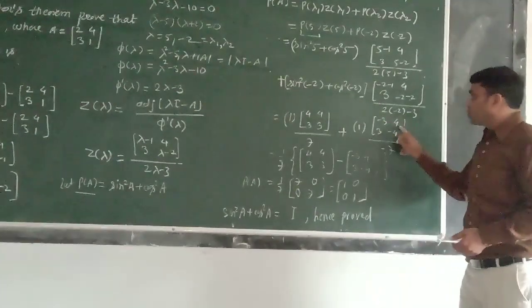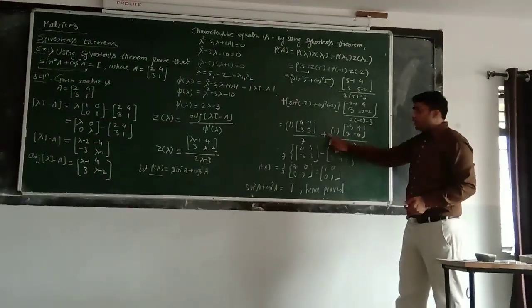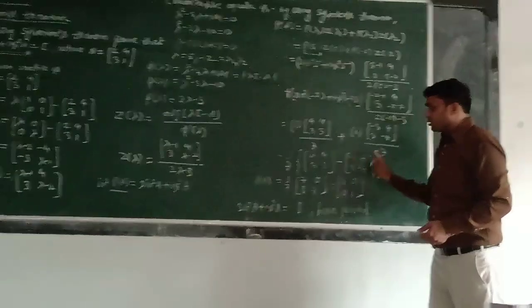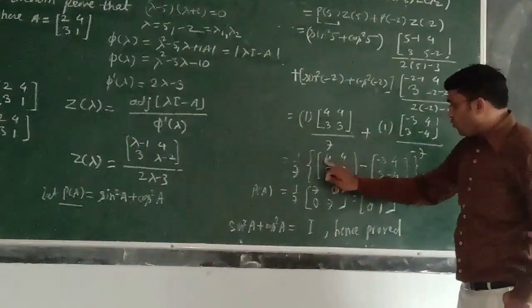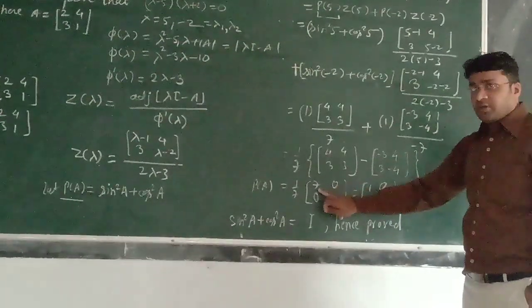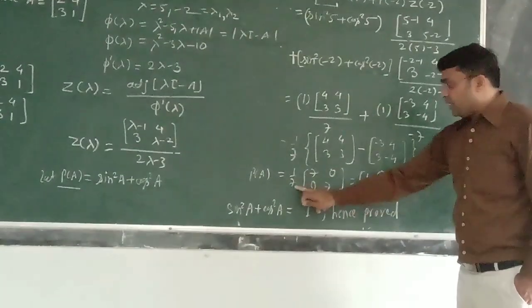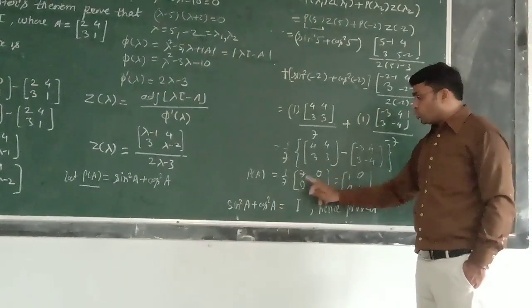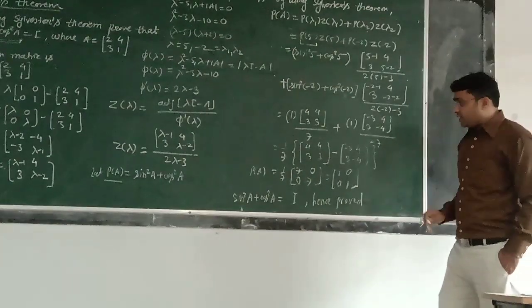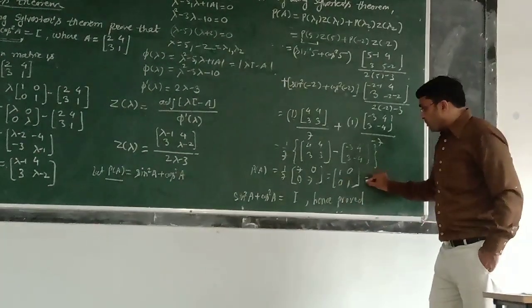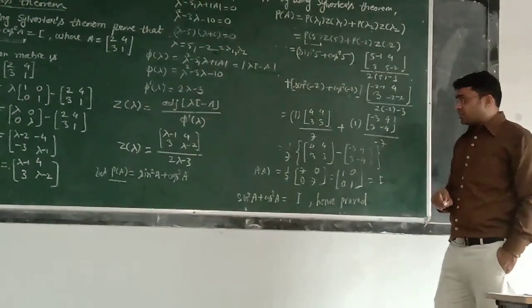Simplify it. 7 is a common. We can take outside. And then we just have to subtract these two. It is a minus sign. We take here. We just subtract these 2 matrices. And after that subtraction, we get 4 minus of minus 3 is plus 7, 0, 0, 7. Divide by the 7, I get 1, 0, 0, 1.